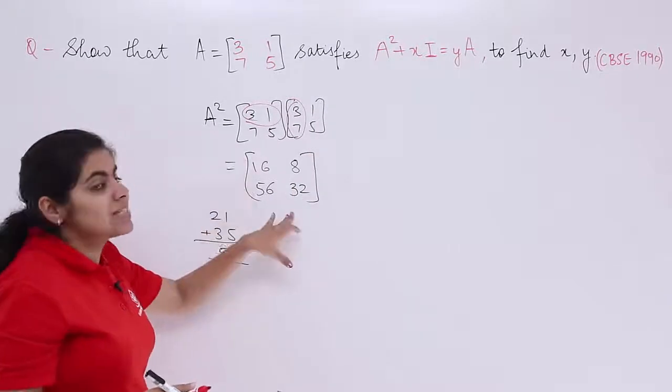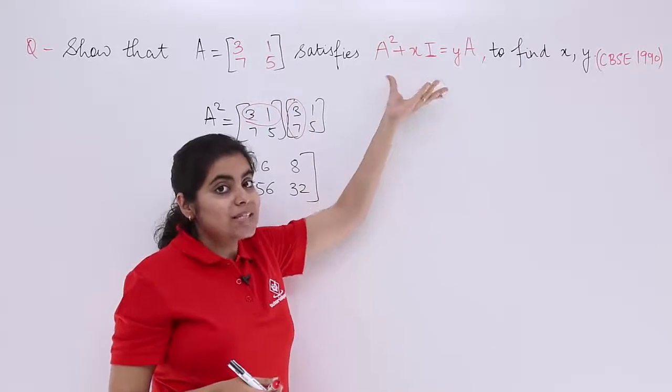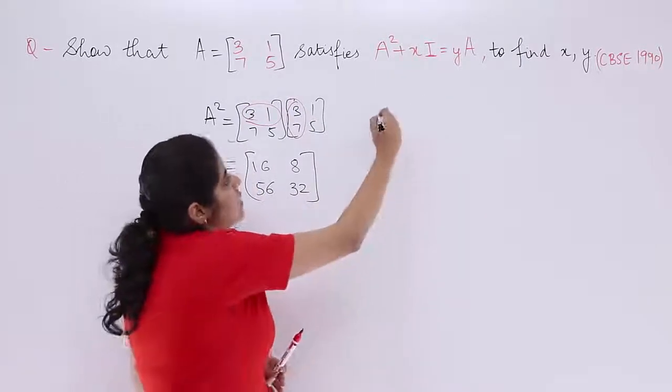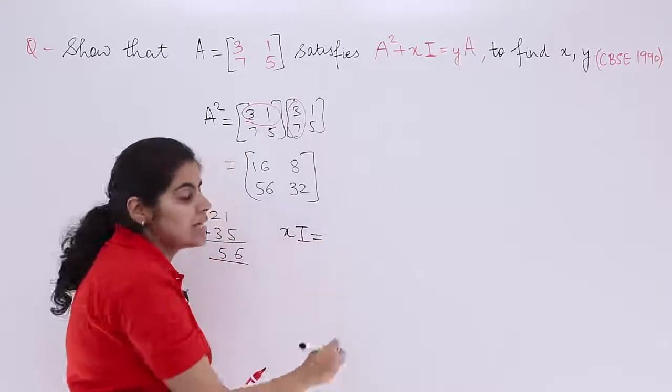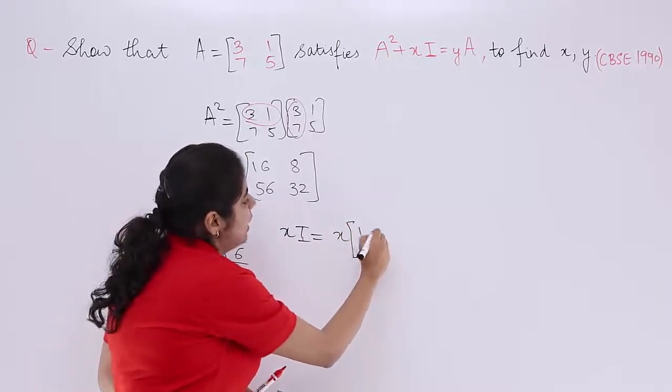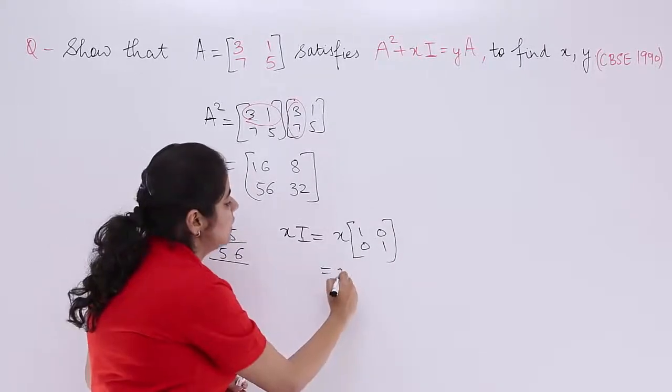This is what? This is your A square. But you need it to satisfy A square plus X times I. So if it is X times I, let's write it here first. X times I is what? X times I is X multiplied by I which is 1001.